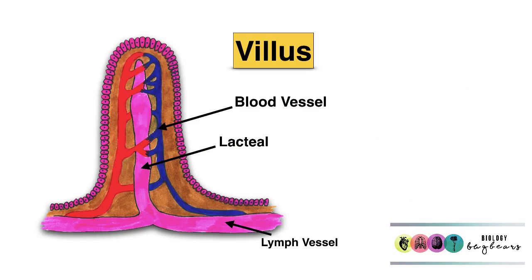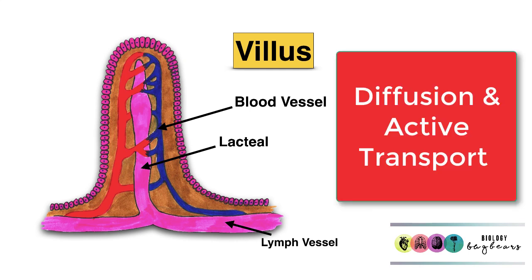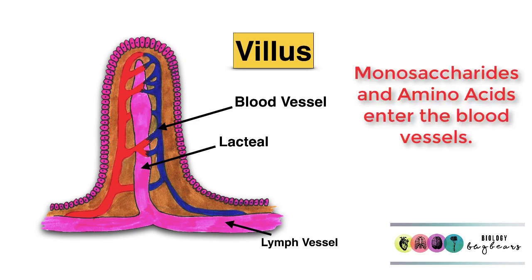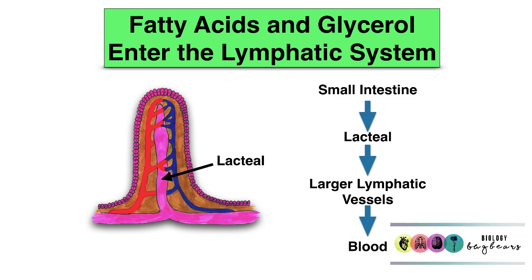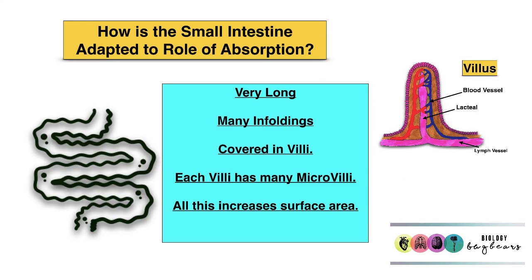The products of digestion leave the small intestine and are absorbed by passing through the wall of each individual villus, mostly by diffusion, though in some cases active transport plays a role. Monosaccharides and amino acids enter the blood vessels at the centre of each villus, while fatty acids and glycerol enter the lacteals, which are part of the lymphatic system, and are eventually returned to the blood of the subclavian vein. The small intestine is well adapted for absorption because it is very long, has many infoldings covered in villi, and villi are in turn covered in microvilli, all increasing the surface area.